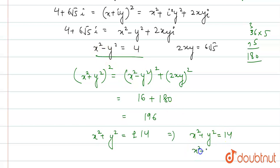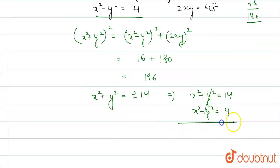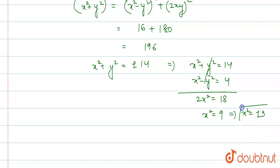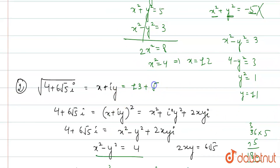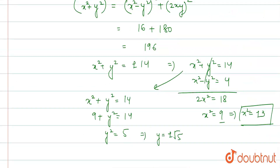With x squared plus y squared equals 14 and x squared minus y squared equals 4, adding gives 2x squared equals 18, so x squared equals 9, meaning x equals plus or minus 3. Then y squared equals 14 minus 9 equals 5, so y equals plus or minus √5. The answer is plus or minus (3 plus √5·i).